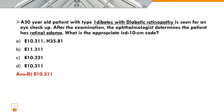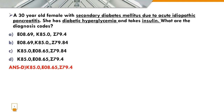When coding diabetes mellitus, the combination code already specifies the type of diabetes and the body part affected. What are the diagnosis codes? The answer is option D. We eliminate the other options based on specificity.